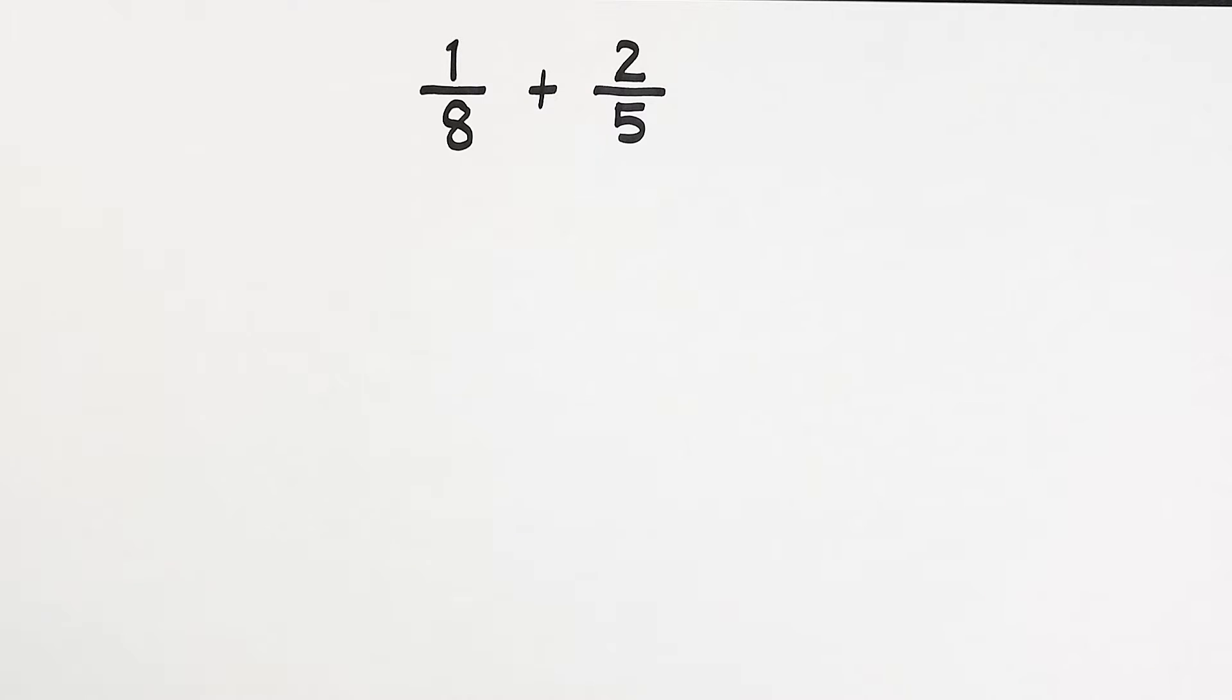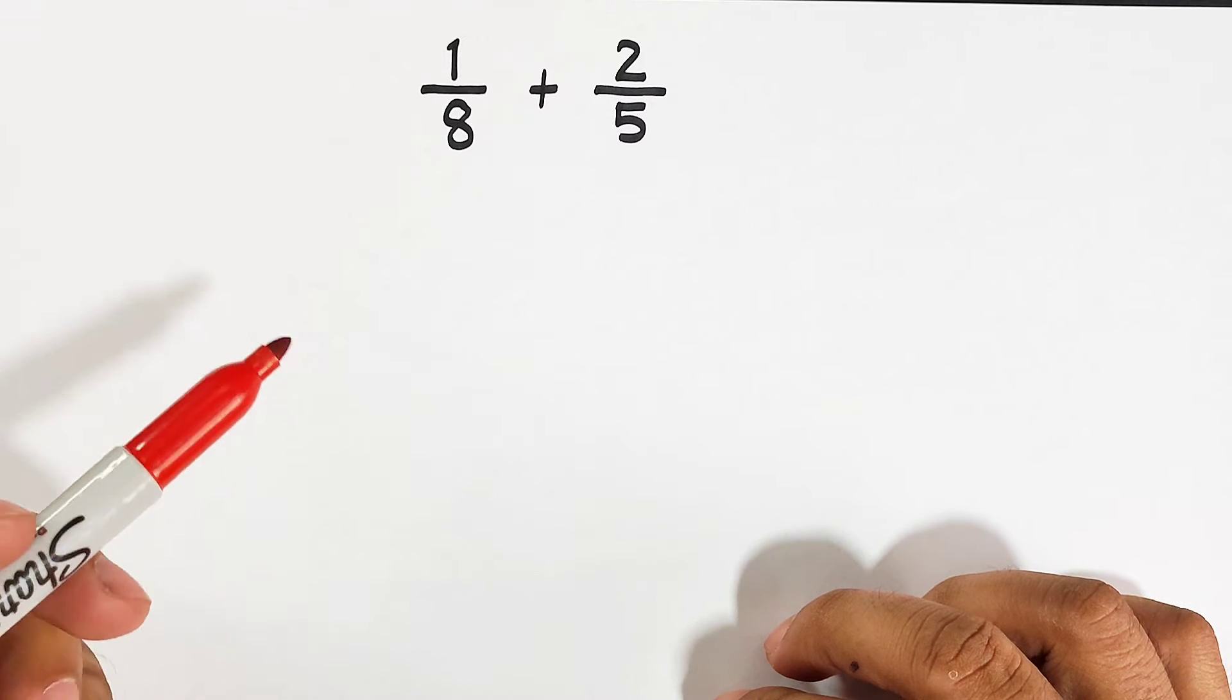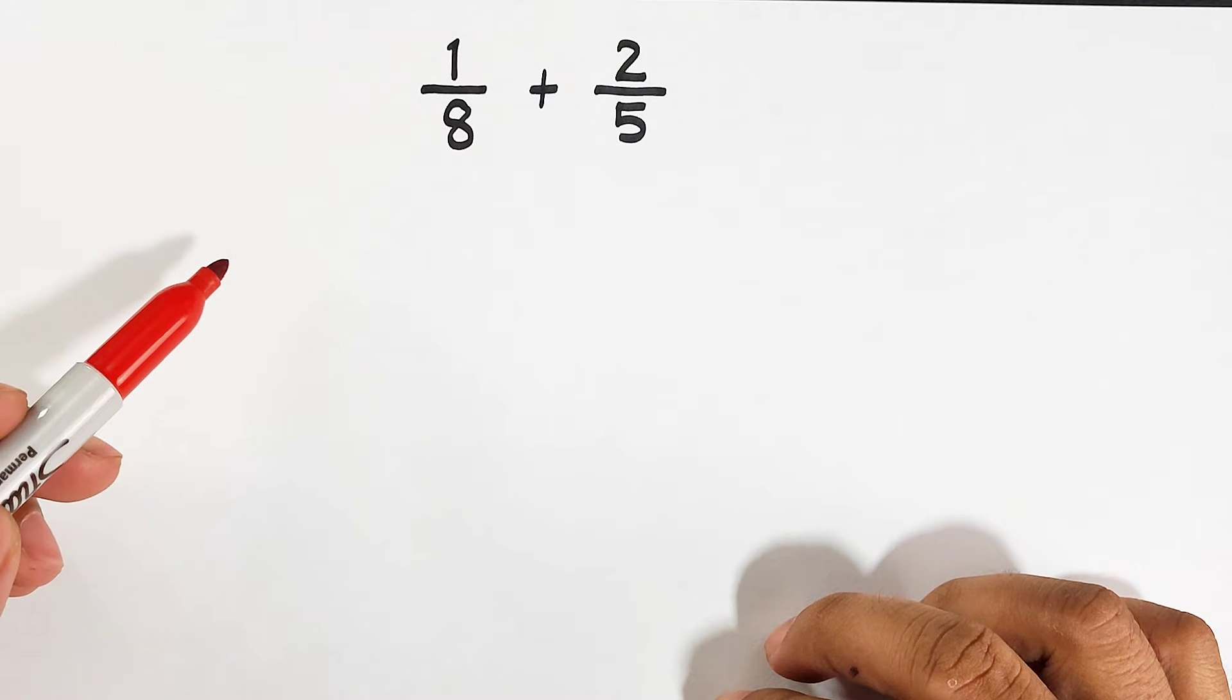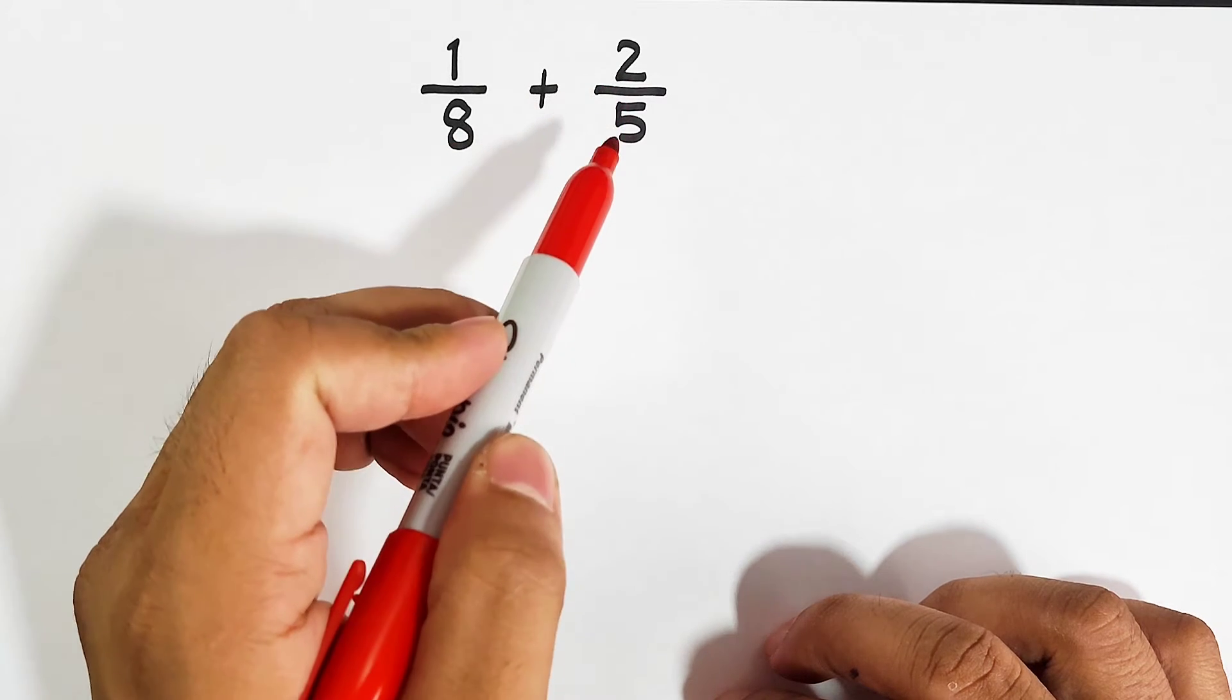Now let's start with the first method. For the first method, we will use the concept of LCD. Because the given problem or the given fractions are 1 over 8 plus 2 over 5.